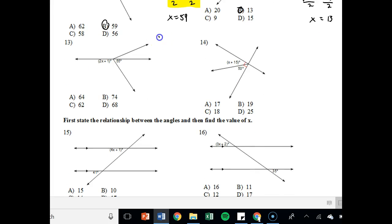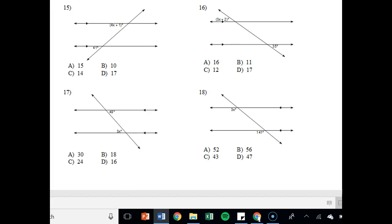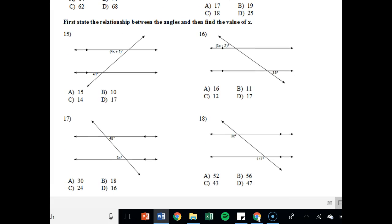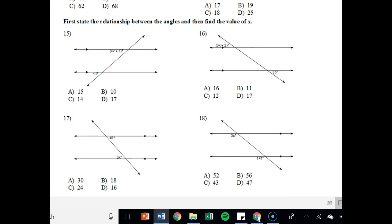Again, on number 13, you're going to want to label, hey, I've got a supplementary relationship. You should be able to solve. And number 14, that right angle there, I've got a complementary relationship. You should be able to write the equation and solve. And then finally, 15 through 18, you're going to want to first state the relationship between the angles and then find the value of x.